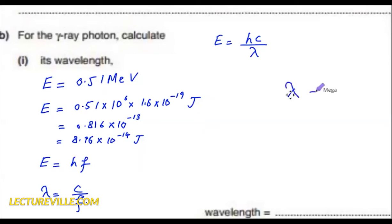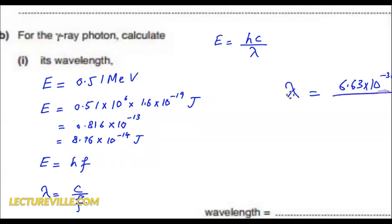I am using the single formula: lambda equals Planck's constant multiplied by the speed of light, divided by energy, which we calculated as 8.16 into 10 to the power minus 14.